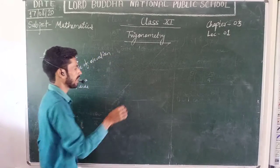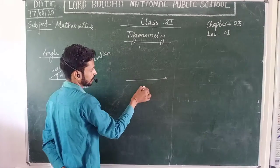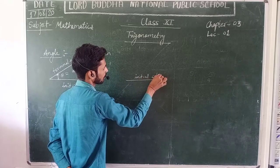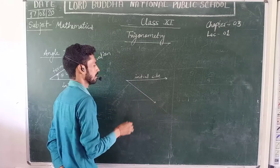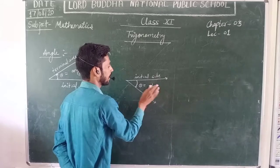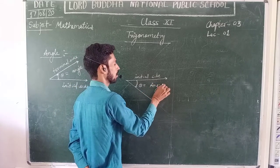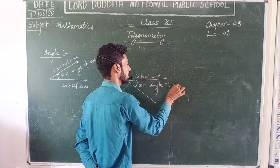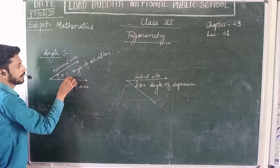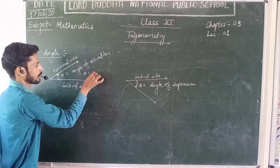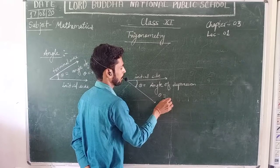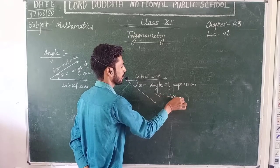But if we are going in the downward direction from the initial side — that is, in the clockwise direction — then theta is known as the Angle of Depression.